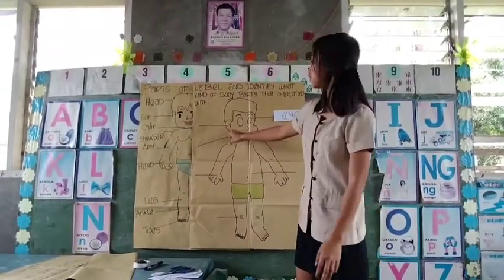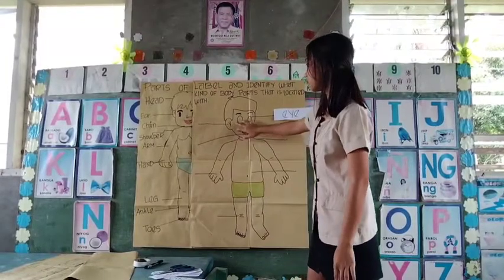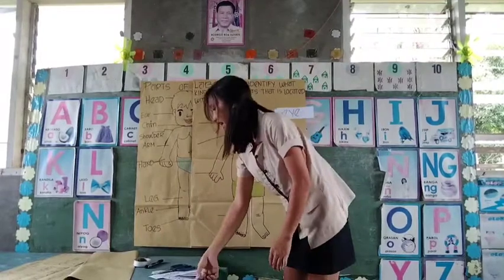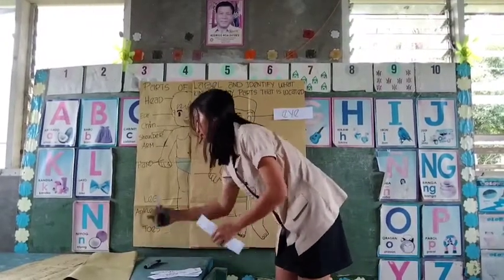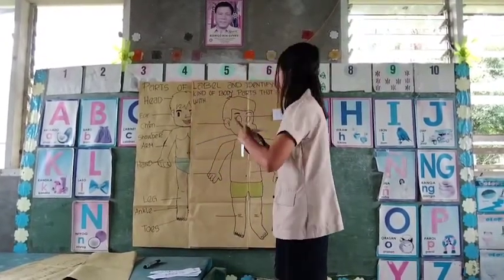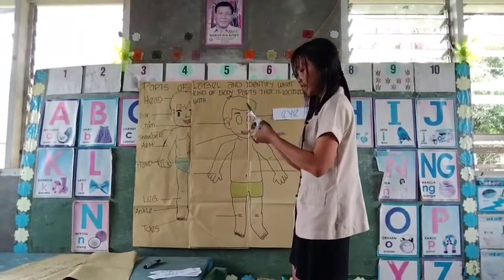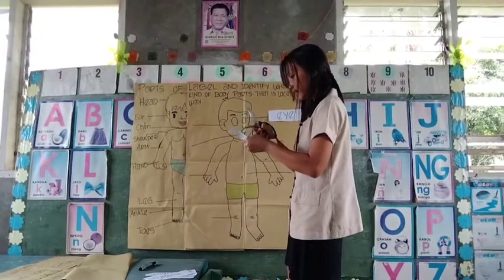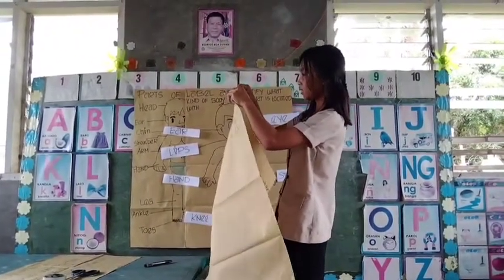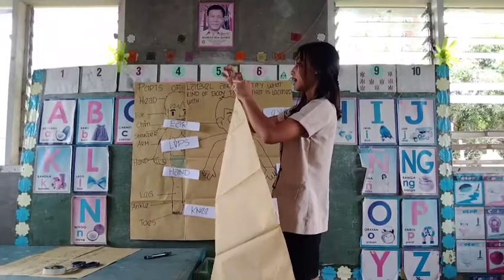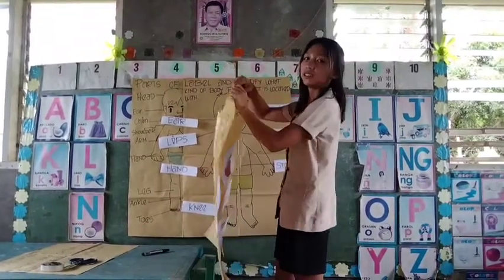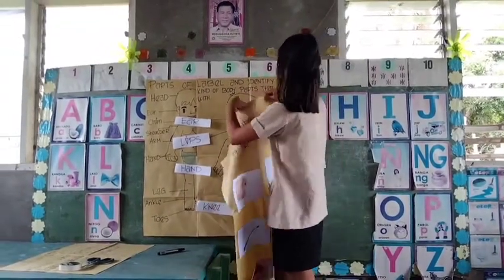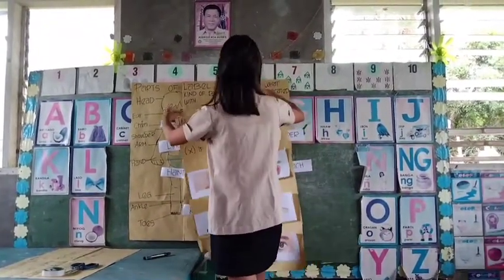Ito naman, anong parts ng ating katawan ito kung nakikinig kayo? Ear. Ear yan siya. Yan ay ginagamit natin para tayo ay makarinig. Very good. Nakikinig talaga sila. Dahil alam na natin ang mga parte ng ating katawan ngayon, alamin natin kung ito ba ay parte ng ating katawan. Itara-tsek natin ang ating mga parte.